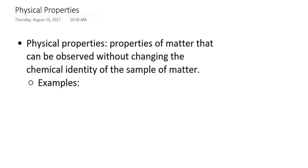Now the properties of matter can be categorized and classified in a number of different ways. But in this particular tutorial we're going to focus our attention on understanding the difference between physical properties of matter and chemical properties of matter. When it comes to physical properties of matter, it's essentially just any characteristic of a sample of matter that I can observe without changing the identity of the sample of matter.